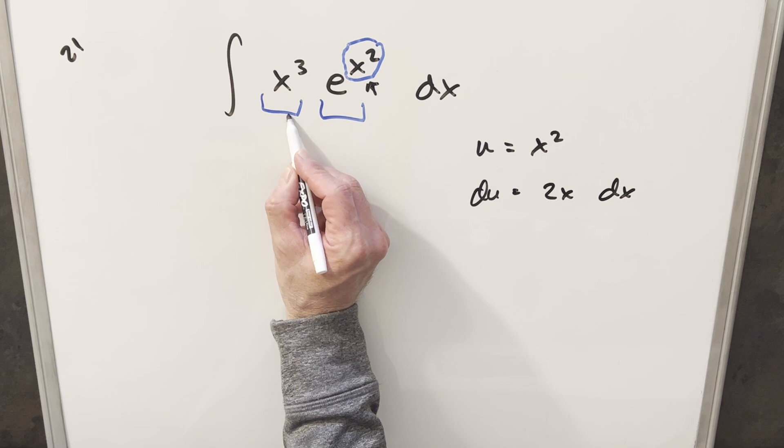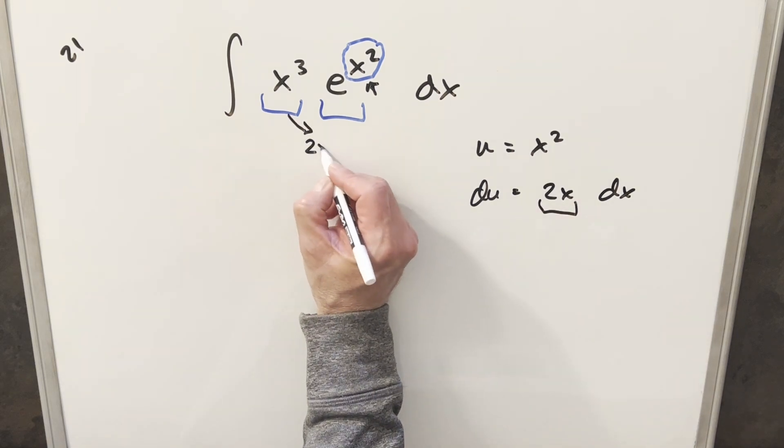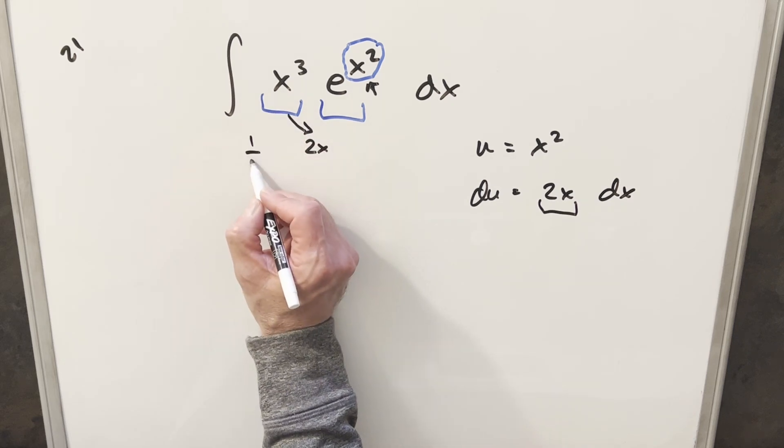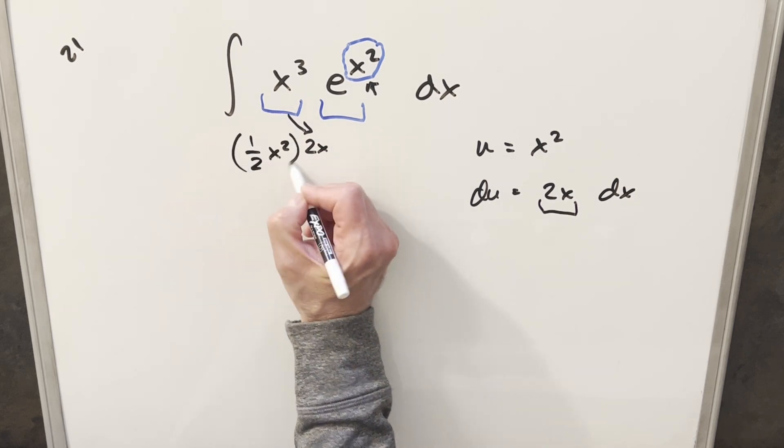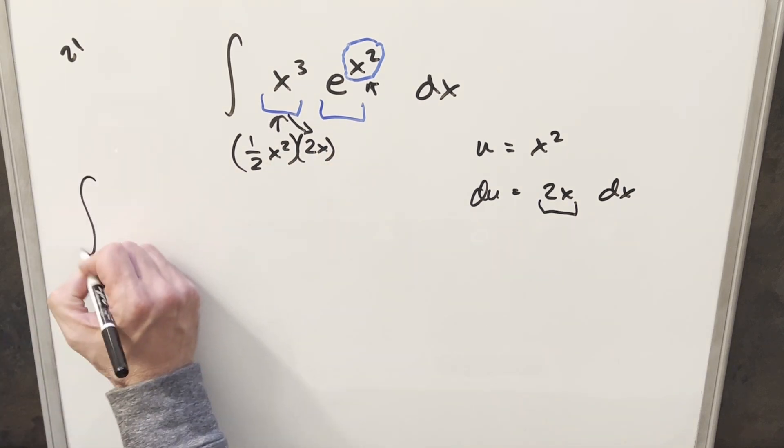And then in order to set up this substitution, what I can do with x cubed is I can split this up. I want to get this 2x, so I'll create a 2x. But then, so that we're still coming back to x cubed, I'll write this as half x squared. Just noticing, multiplying those together, we get x cubed. So I'll do a quick rewrite just to make it clear.